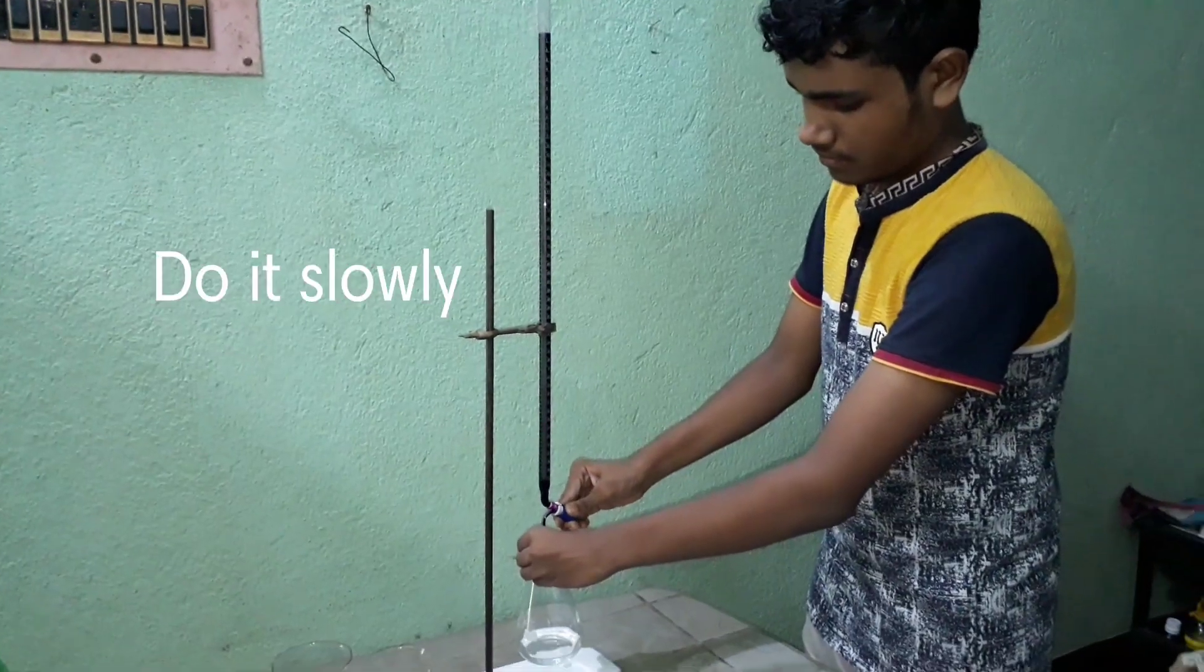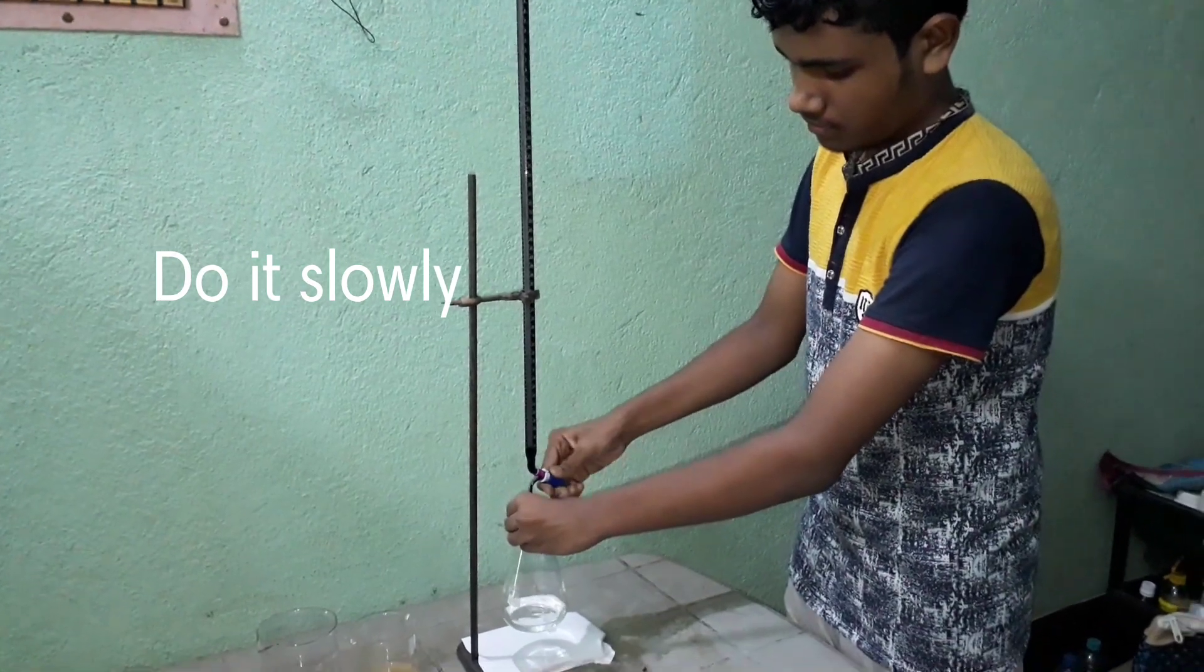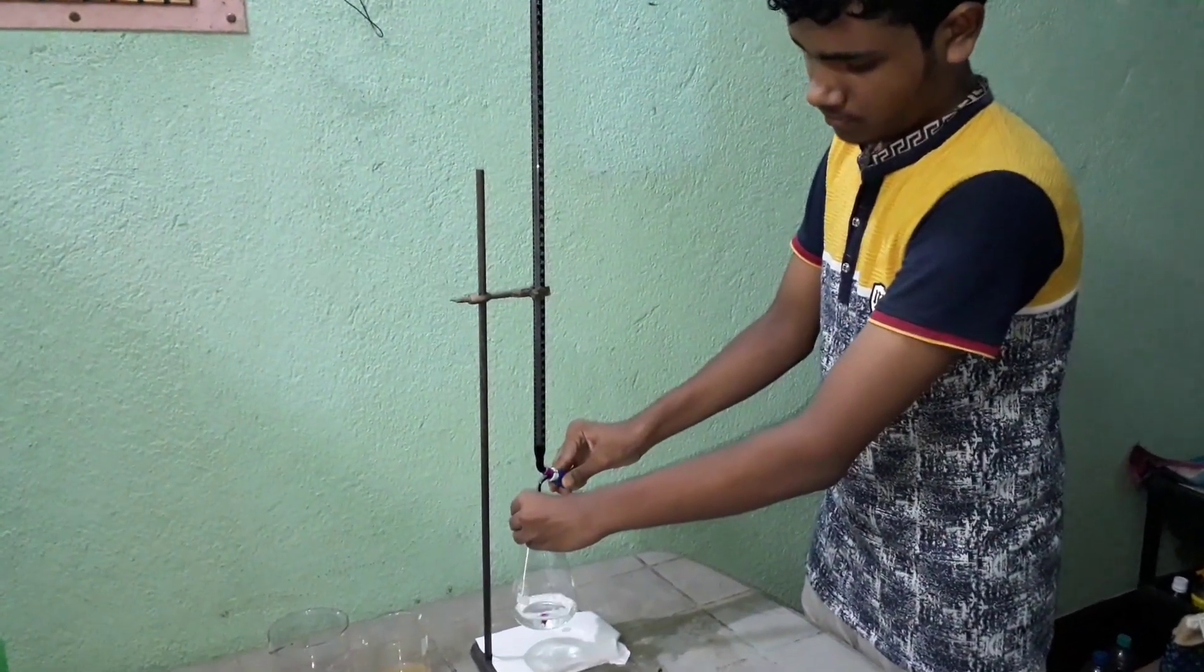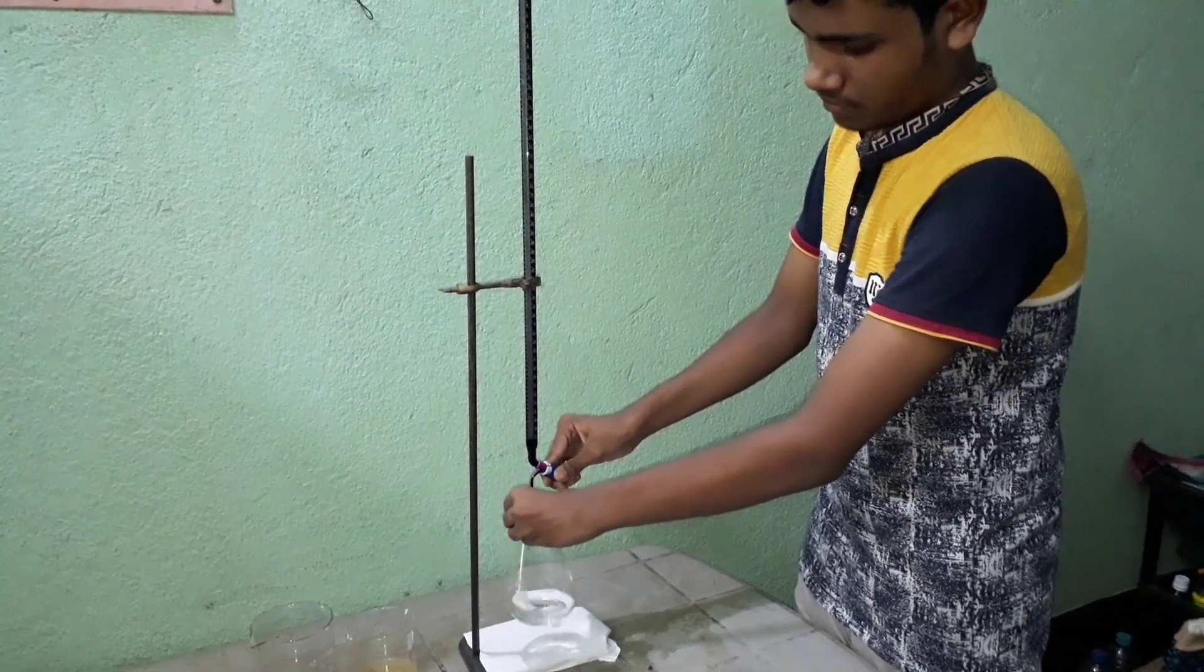Open the stopcock and drip KMnO4 solution slowly into the Mohr salt solution. You should have enough patience to do it.